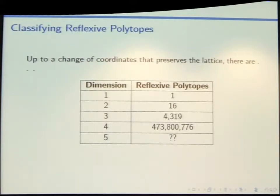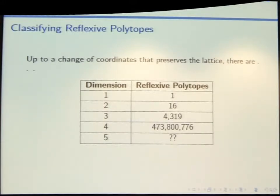Is there an estimate for the order of magnitude or how it grows? I don't know — you could certainly take the data people have on classification of smooth Fanos as a loose upper bound. There is an empirical estimate of the growth fitting these numbers to some exponential: for 5 dimensions it's roughly 10 to the 18, and in general it's something like 10 to the power of 2 to the dimension plus 1.